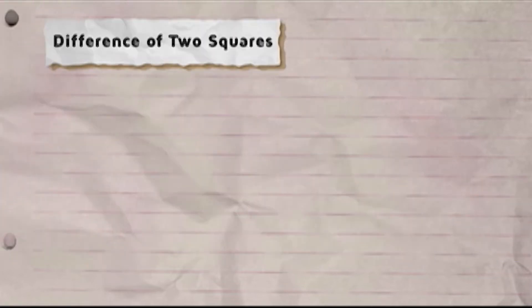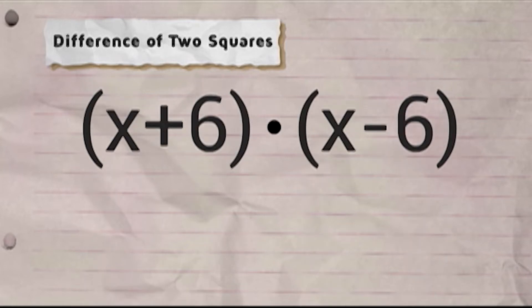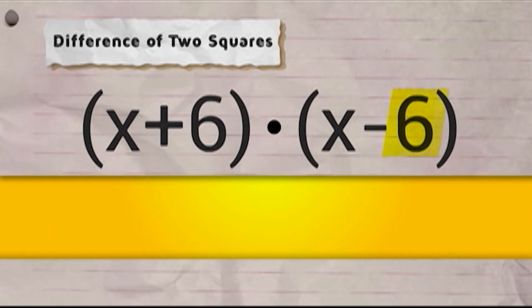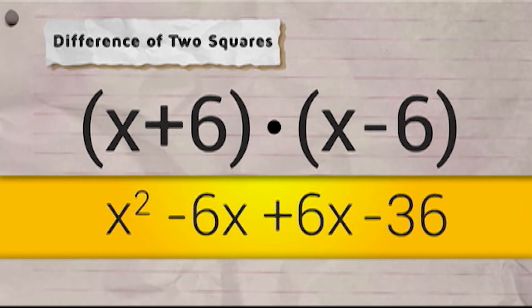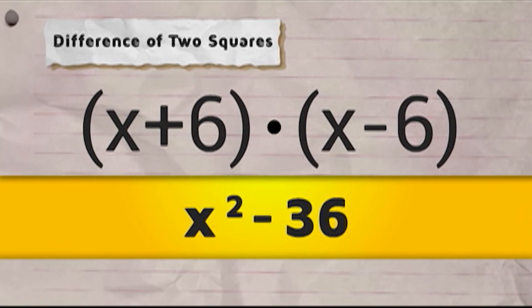The resulting product is the difference of two squares. Another example: quantity x plus six times quantity x minus six equals x squared minus six x plus six x minus 36, which equals x squared minus 36.